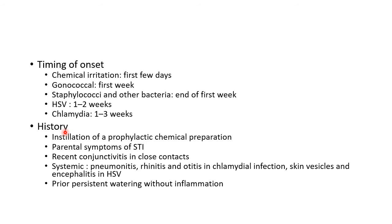Important points in history for neonatal conjunctivitis: we should ask about installation of any prophylactic chemical preparation to rule out chemical conjunctivitis, enquire about parental symptoms of sexually transmitted infections, and ask about recent conjunctivitis in close contacts. Systemic symptoms like pneumonitis, rhinitis, and otitis — seen in chlamydial infection — should be ruled out. Skin vesicles and encephalitis — seen in herpes simplex infection — should also be ruled out. Prior persistent watering without inflammation indicates nasolacrimal obstruction.